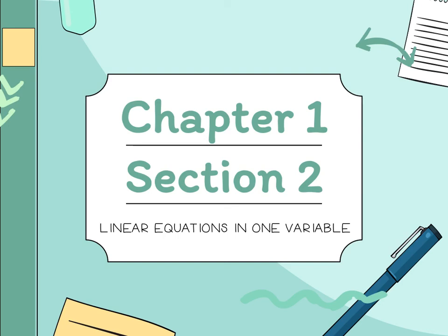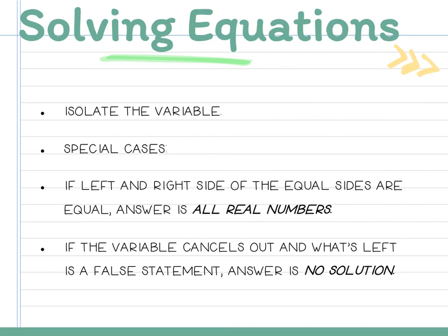Let's see what Section 2 is all about. We're going to be solving equations. Our goal is to isolate the variable on one side of the equal sign. We'll have two special cases: when the left and right sides are exactly equal, the answer is all real numbers — any value of x makes the equation true. The other special case is when the variable cancels out and you're left with a false statement like 2 equals 5 — then the answer is no solution. So we'll get either an exact value of x, all real numbers, or no solution.